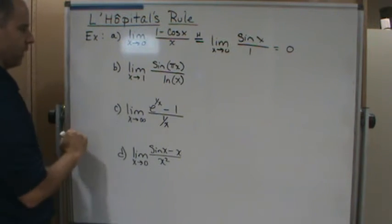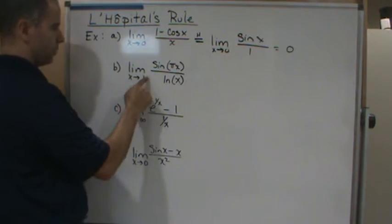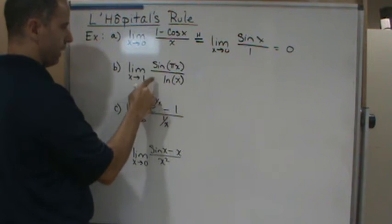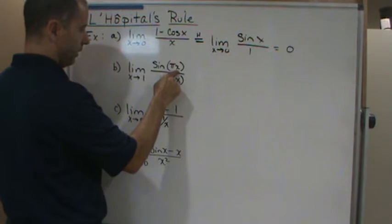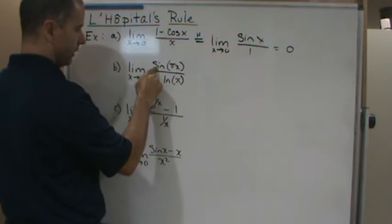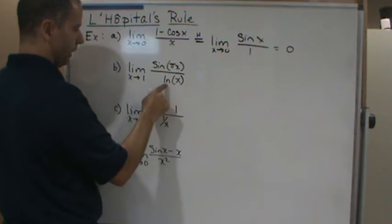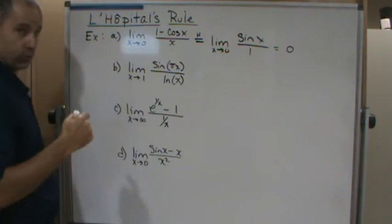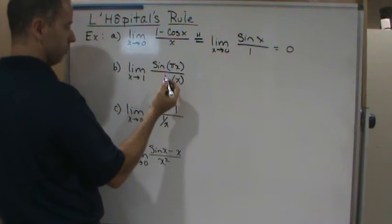Now let's do this one: the limit as x approaches 1 of this function. As we go to 1, the sine of π is 0, and the natural log of 1 is 0. So again, we get 0 over 0.